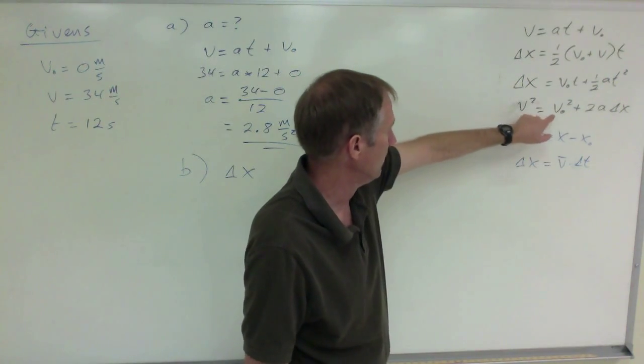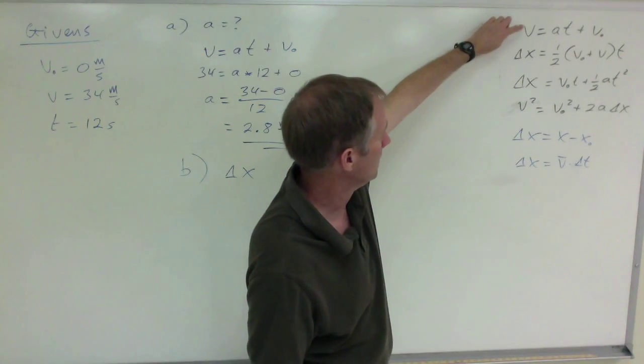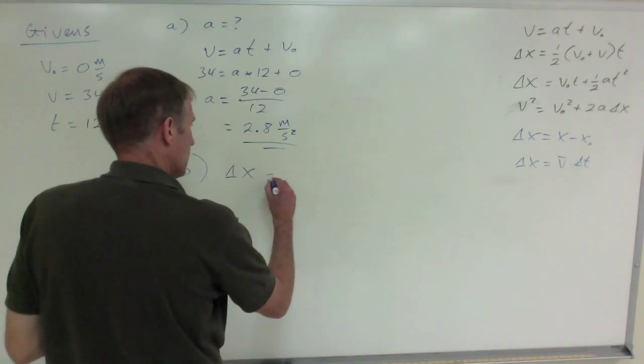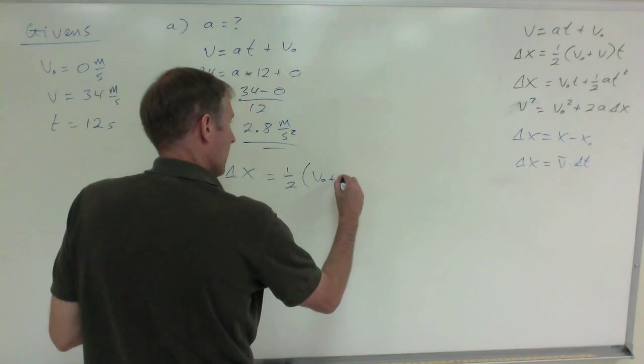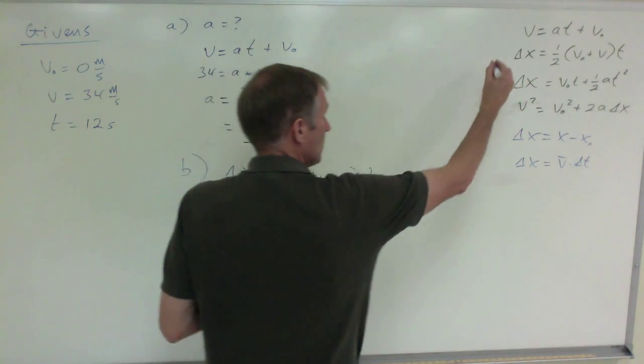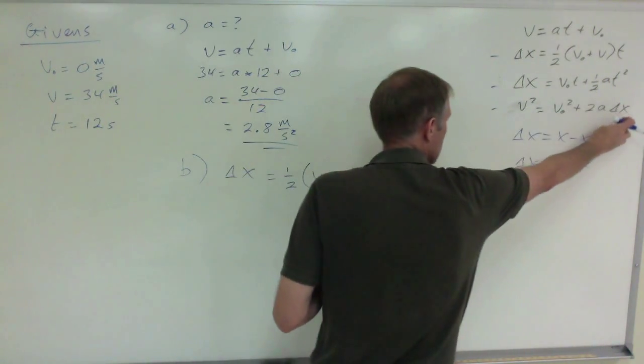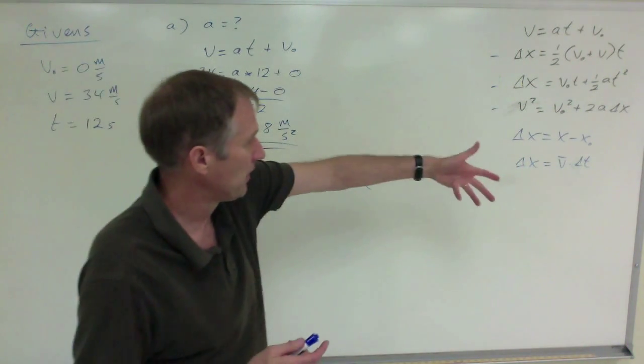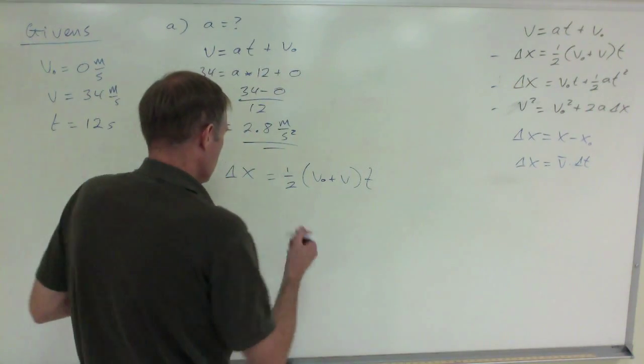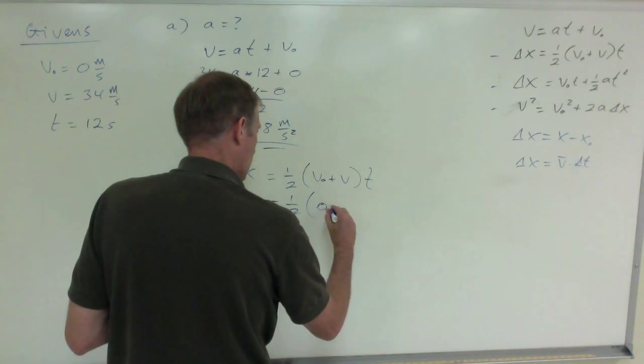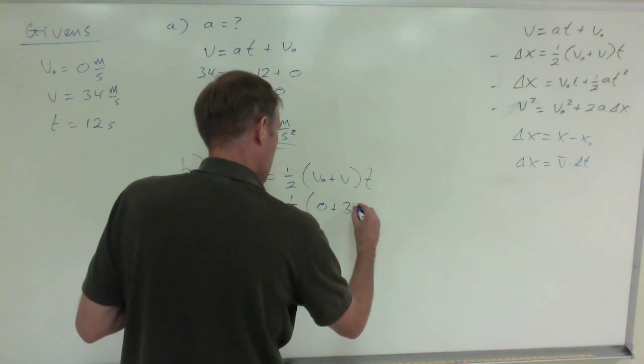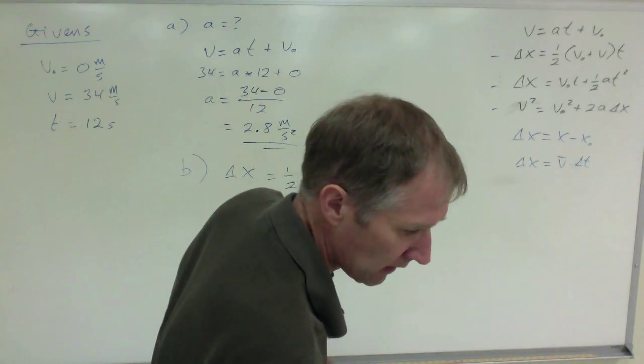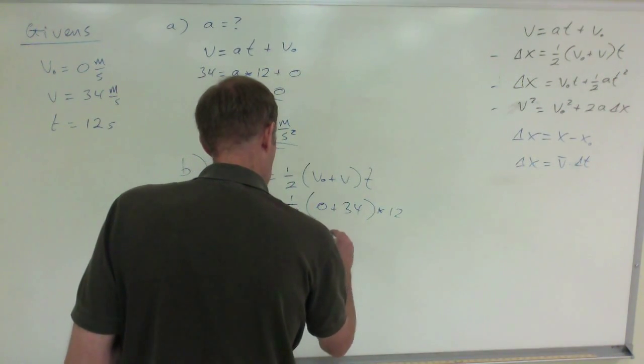You can use this one because you know the final velocity, the initial velocity, the acceleration. This one of course is useless because it doesn't have displacement in it. I like this equation just because it's so simple. And that's the one I'm going to use. Write down the raw equation. I could have used that one, I could have used that one. It's all from delta x. And I should get the same answer whichever way I do it. If I don't, then I made a mistake somewhere. Because it's the same displacement whichever way I solve it. So this is going to be one half, one half 0 plus 34 times 12. And I got 204 meters. Don't forget the units.